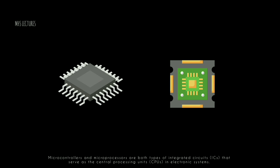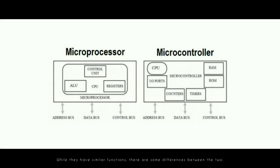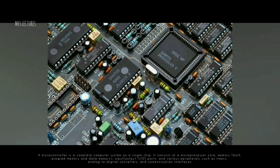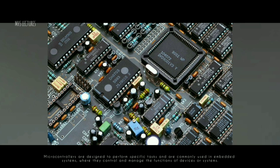Microcontrollers and microprocessors are both types of integrated circuits (ICs) that serve as the central processing units (CPUs) in electronic systems. While they have similar functions, there are some differences between the two. A microcontroller is a complete computer system on a single chip. It consists of a microprocessor core, memory (both program memory and data memory), input/output (I/O) ports, and various peripherals such as timers, analog-to-digital converters, and communication interfaces. Microcontrollers are designed to perform specific tasks and are commonly used in embedded systems.